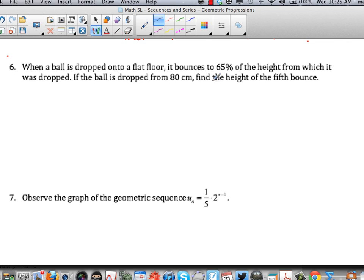A little picture will help us tremendously here. So a ball is dropped onto a flat floor. Let's say we're dropping a ball from that height, and here's the floor over here. The ball bounces to 65% of the height from which it was dropped. If it was dropped initially from 80 centimeters, I want the height of the fifth bounce.